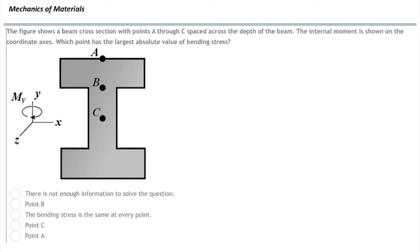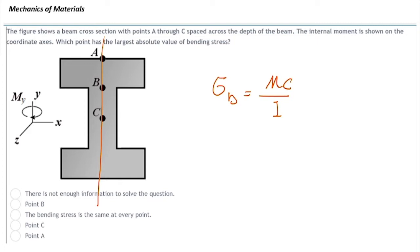The first question asks which of these points has the largest absolute value of bending stress. The moment is about the y-axis, meaning the axis of interest is in the vertical direction. Because all of these points are at the same distance from the centroid, they all have the same bending stress. Sigma_b is mc over i, and m and i are constant for the section, so the only variable is c. In this case, all of them actually have zero stress because they are all located at the neutral axis.